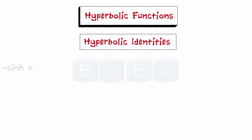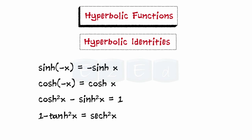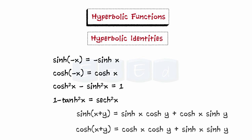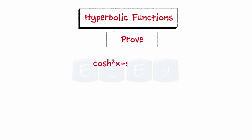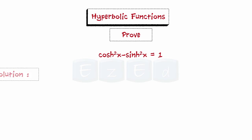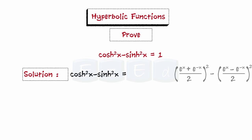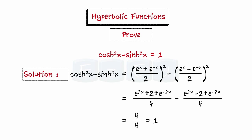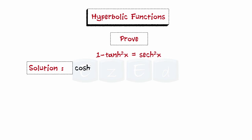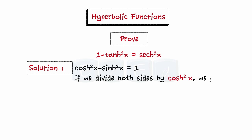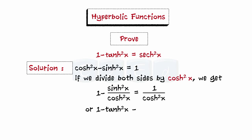We want to prove that cosh²x − sinh²x = 1. Substituting the values of cosh and sinh and simplifying, we get it equal to 1. Next, to prove 1 − tanh²x = sech²x, we start with the identity cosh²x − sinh²x = 1. Dividing both sides by cosh²x and simplifying, we get 1 − tanh²x = sech²x.